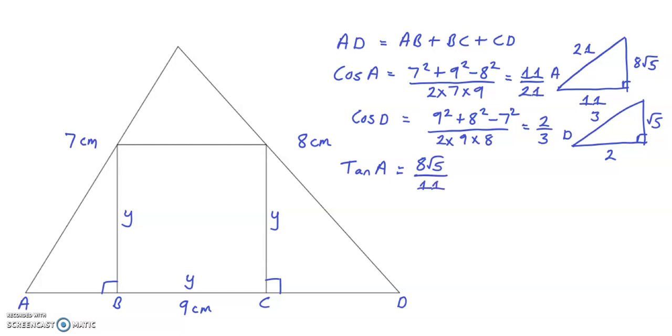And that will equal the opposite y over the adjacent AB. Therefore, AB equals 11Y over 8 root 5.